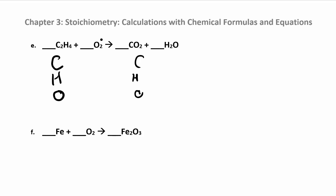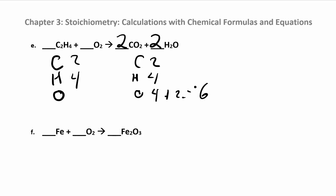Notice how you have oxygen by itself over here — it's best to save that to the end to balance. So starting with carbon: you have two carbons on this side, so add two carbons over there. Normally you'd then balance oxygen, but we're going to skip to hydrogen. I have four hydrogens on the left, so I put a two in front to get four on the right. Now: two carbons and four hydrogens on each side. For oxygens on the right: two times two gives me four, plus two times one gives me two — so six oxygens total. I add a three in front of O₂ on the left. I have two carbons, four hydrogens, six oxygens on each side. Balanced.